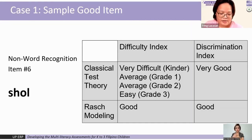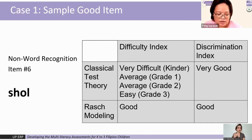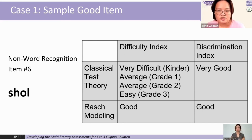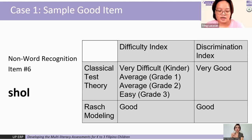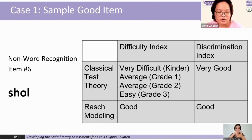Let's take a look at two cases. Case 1 is an item from the non-word reading test and is considered a good item, even with the resulting difficulty rating for kinder and grade 3. In the Philippines, English is not used in kindergarten, and word reading is not a skill expected of kindergartners, which could account for the very difficult rating for kindergarten. By grade 3, the learner would already have much exposure to English reading instruction. This further analysis allowed us to decide to retain this item.